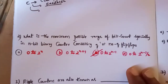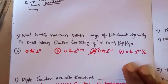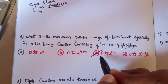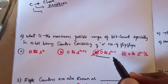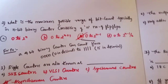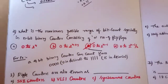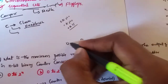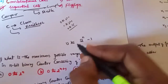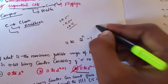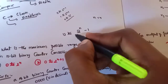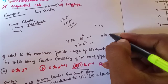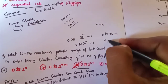What is the maximum possible range of a bit count? Especially in an n-bit binary counter consisting of n number of flip-flops. For example, you have a 4-bit binary counter. The formula gives 0 to 2^4 minus 1. So 2^4 is 16, and 16 minus 1 is 15. So the range is 0 to 15.